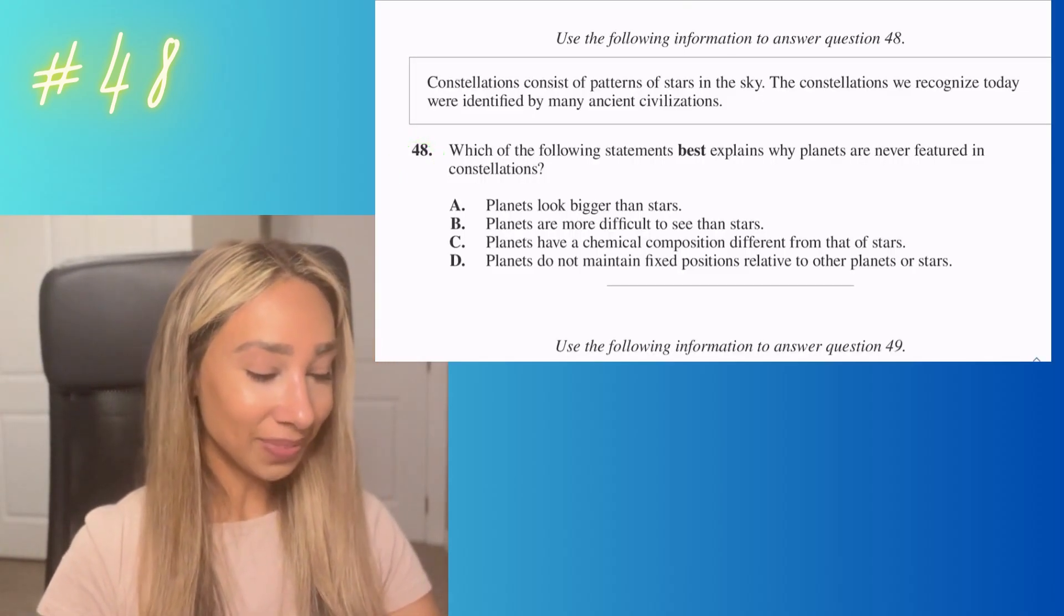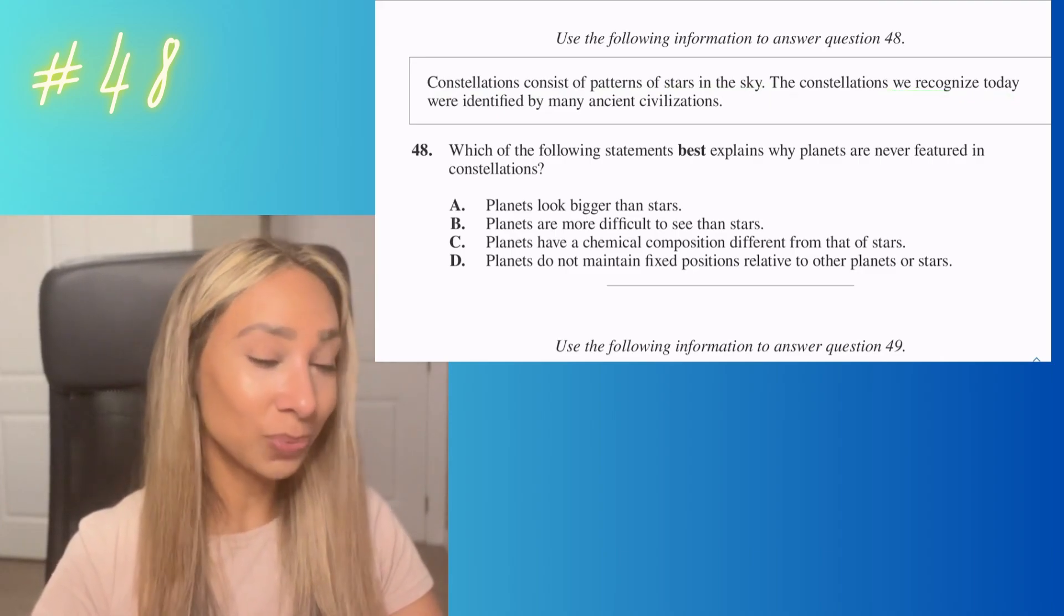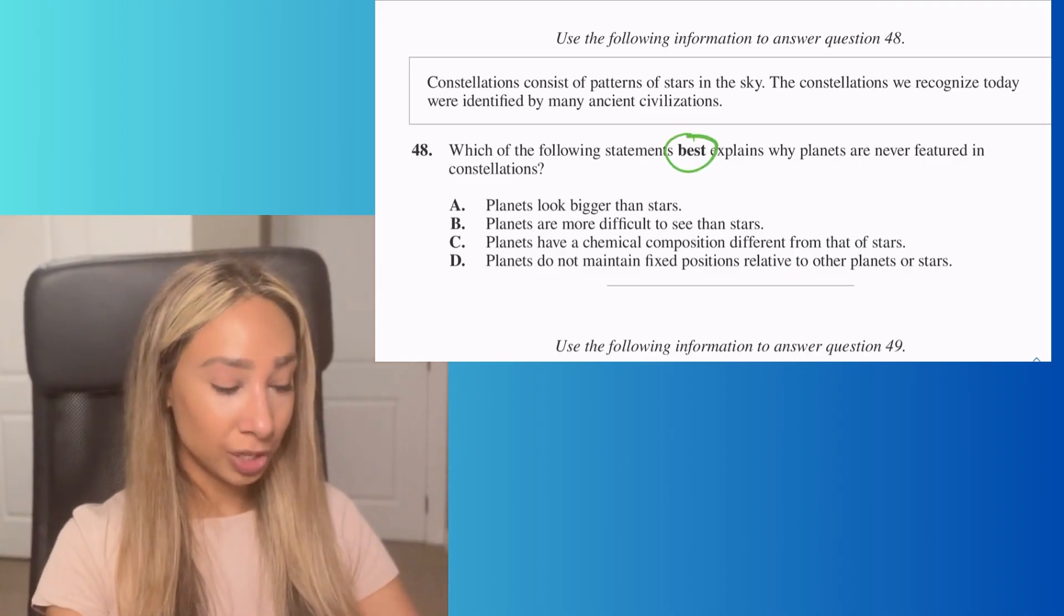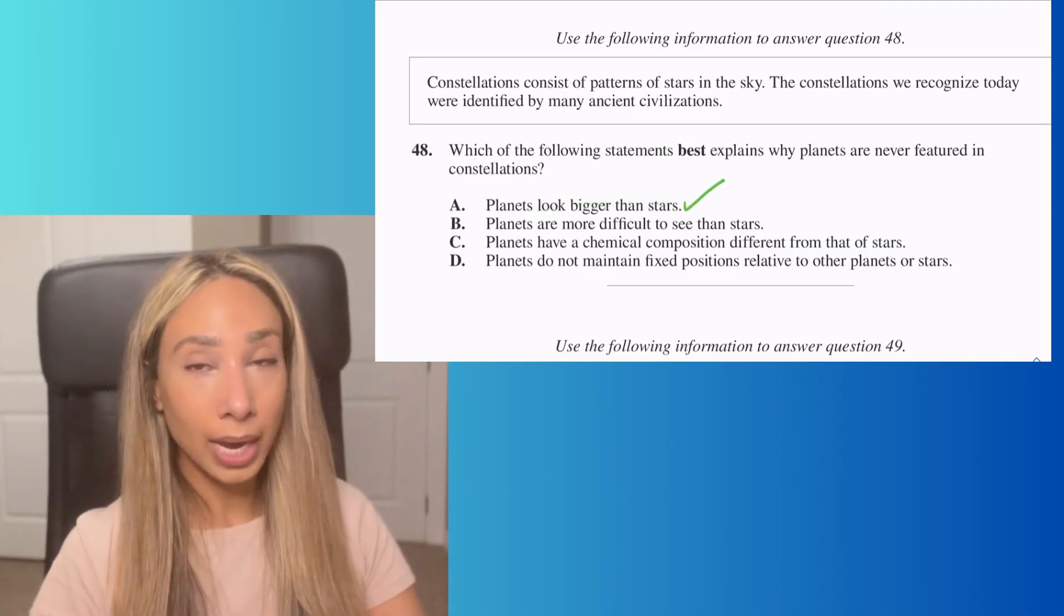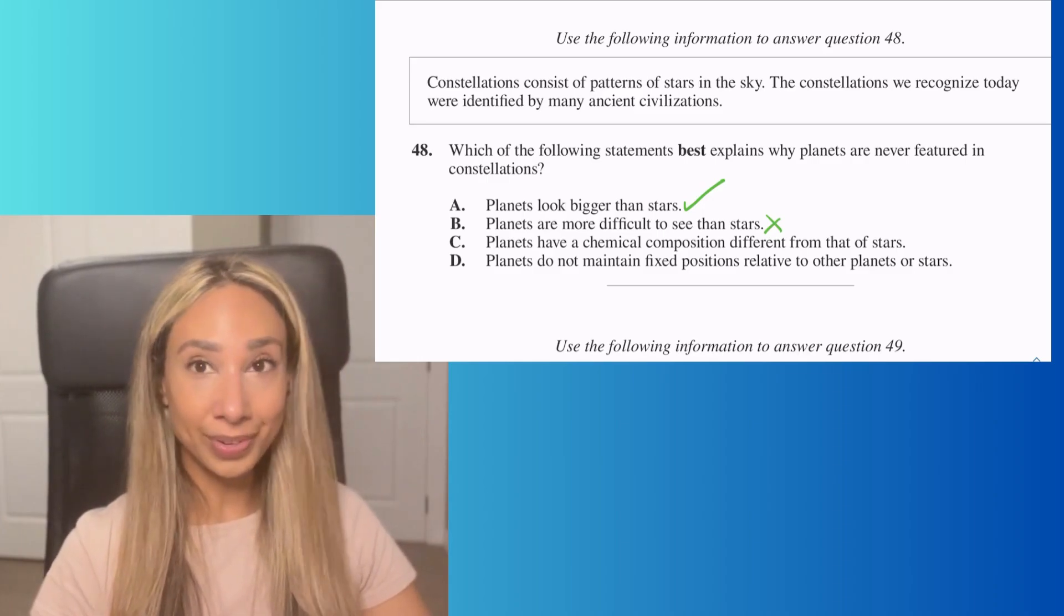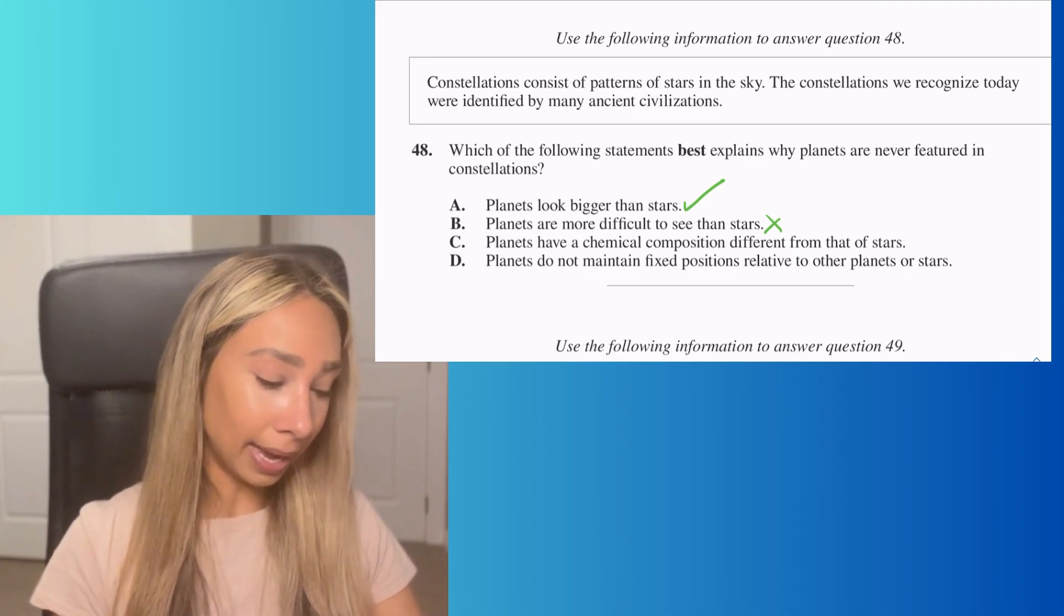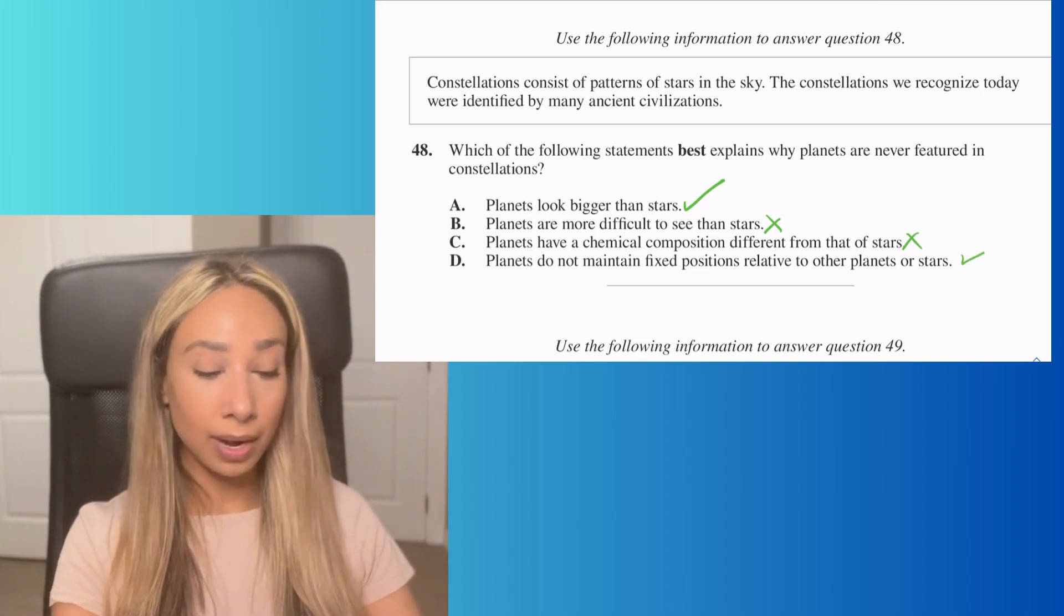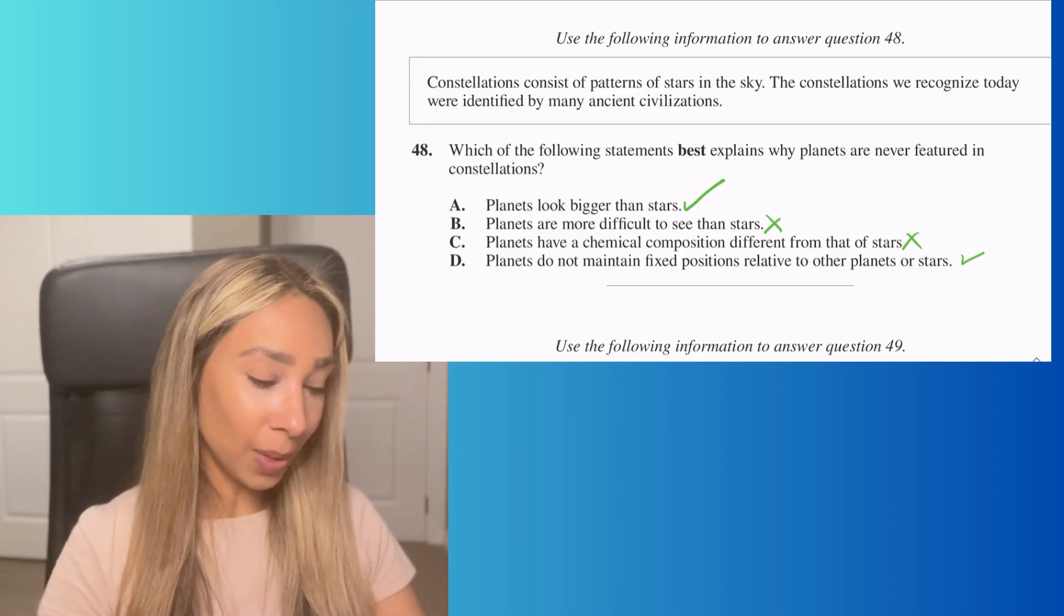Number 48. Constellations consist of patterns of stars in the sky recognized by ancient civilizations. Which of the following best explains why planets were never featured in constellations? Yes, planets look bigger than stars—that's possible, but not all planets. Planets are more difficult to see—that contradicts the first one. Planets have different chemical composition—that's true but you can't observe that from Earth, especially in ancient times.